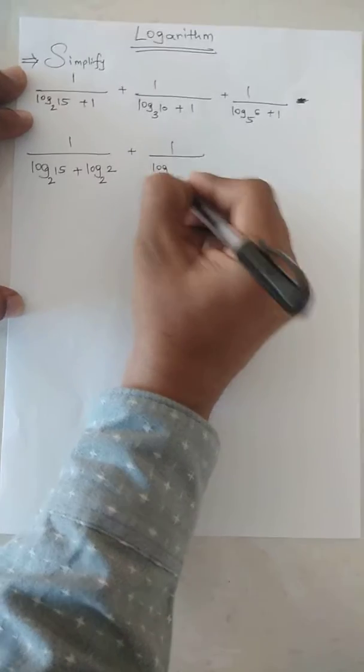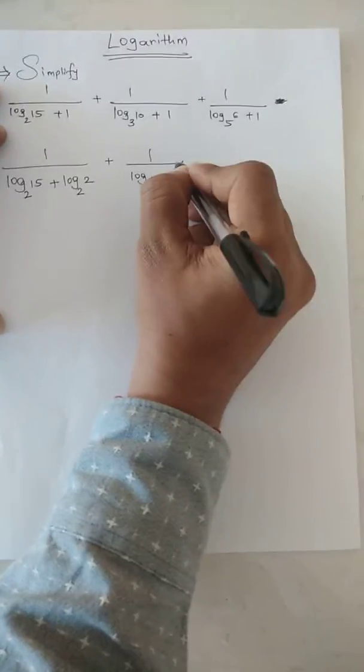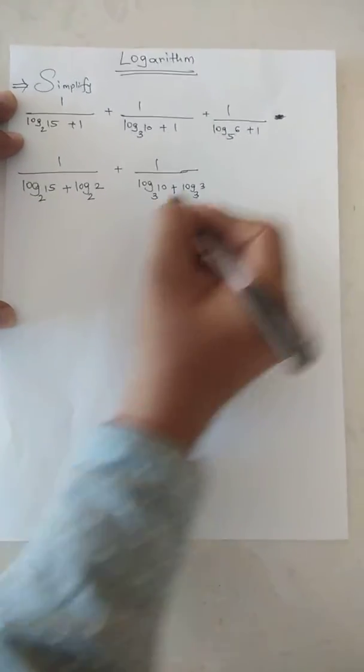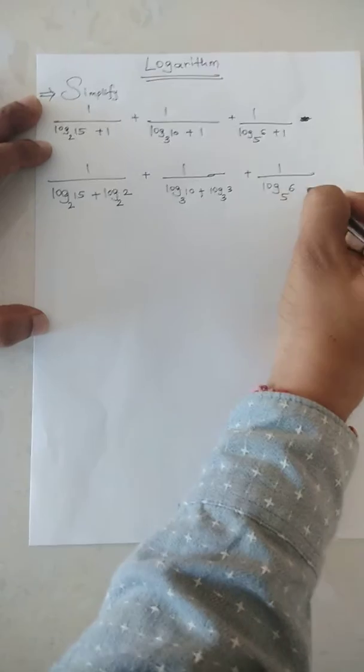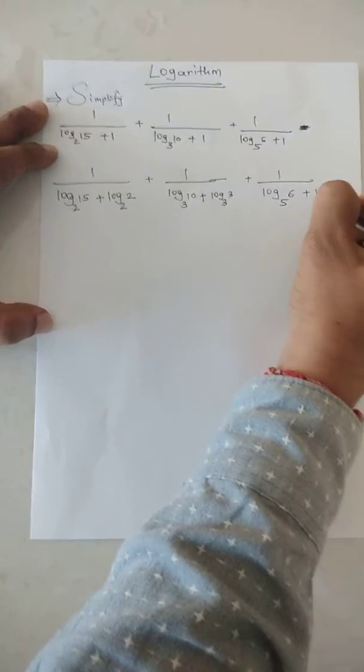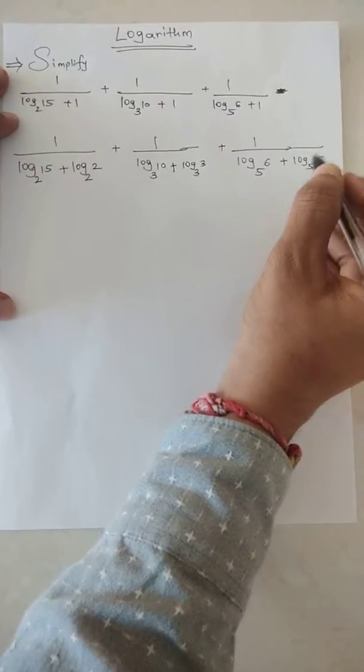log base 3 of 10, plus again 1 is there, so log base 3 of 3, base same, plus 1 over log base 5 of 6 plus log base 5 of 5, so again the base will remain the same. Now we